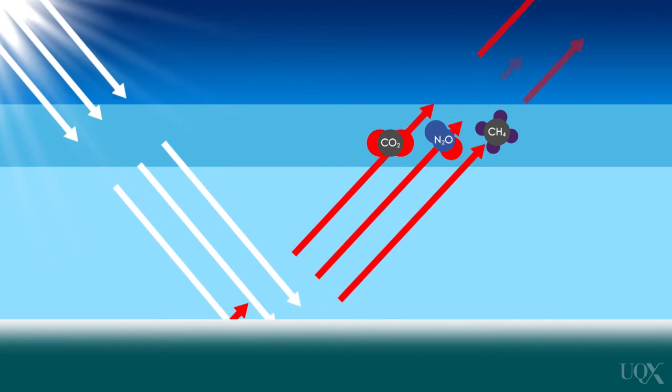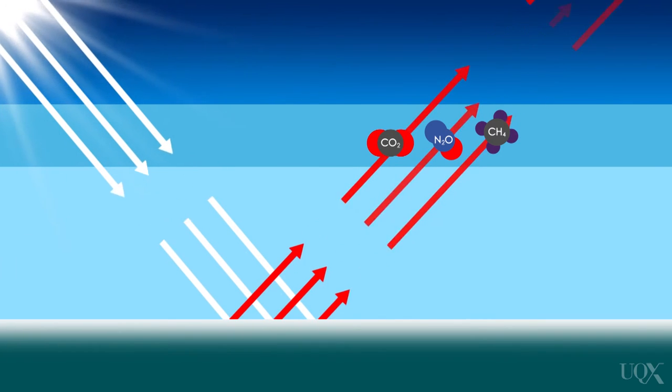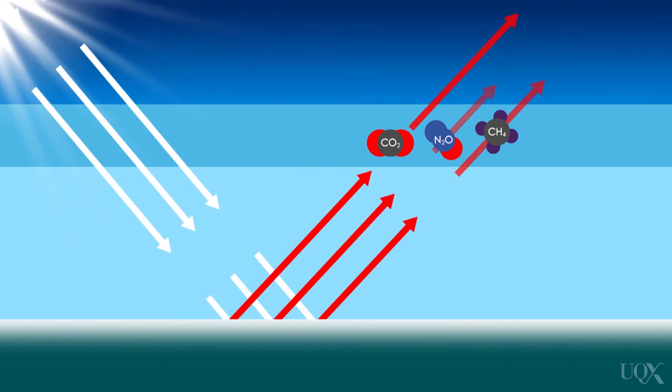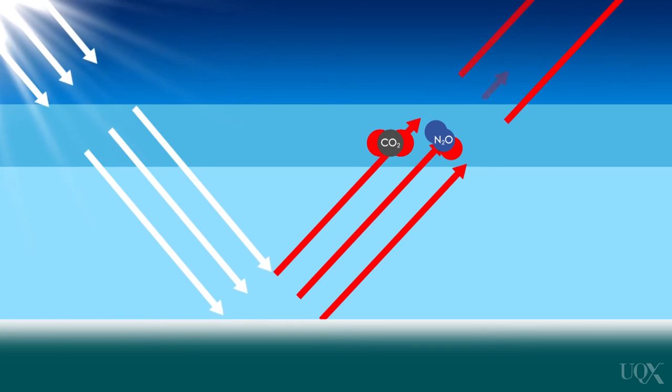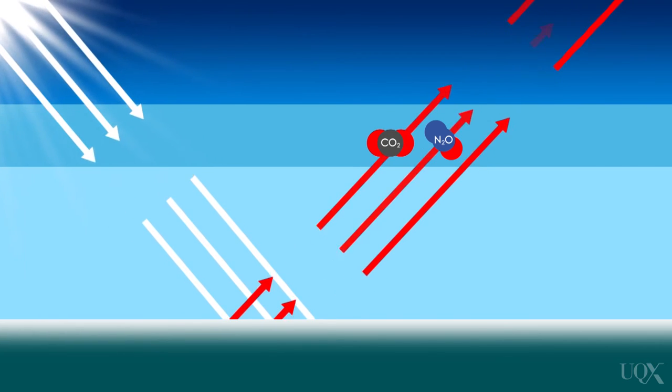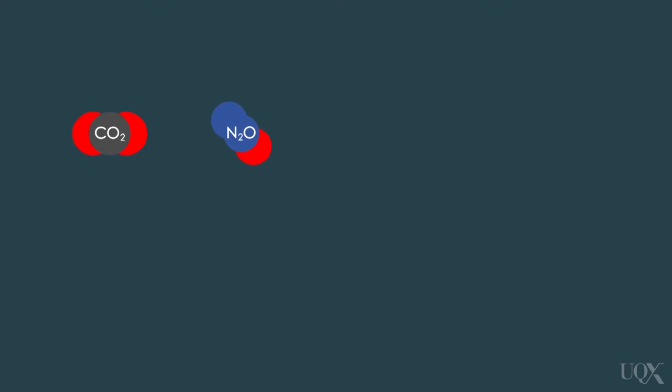Each greenhouse gas traps heat in the atmosphere at different rates, and they also have different atmospheric lifetimes. For example, methane has a lifetime of around 12 years, while nitrous oxide stays in the atmosphere for 10 times longer at 121 years. This leaves us with the classic problem of comparing apples to oranges.